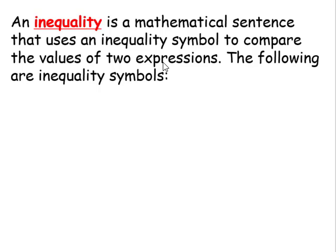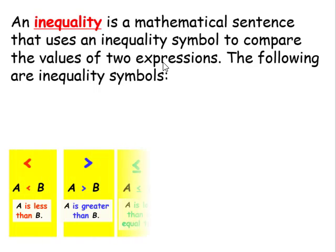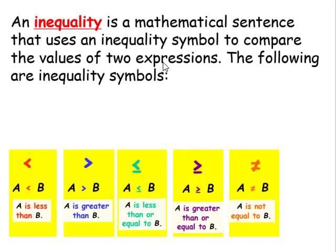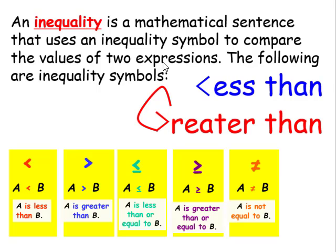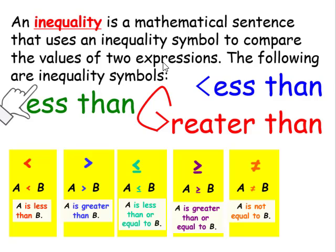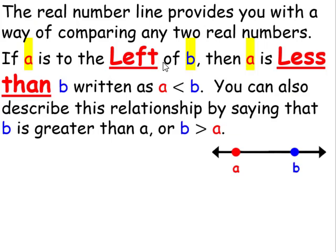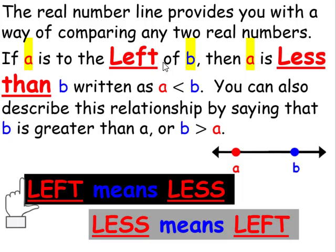An inequality is a mathematical sentence that uses an inequality symbol to compare the values of two expressions. If you ever get stuck remembering whether a symbol means greater than or less than, the less than symbol can have 'less than' written into it, and the greater than symbol can be formed similarly. Also, if you look at your left hand palm down, you can make an L for less than. The real number line provides a way of comparing any two real numbers. If A is to the left of B, then A is less than B. You can also describe this by saying B is greater than A. So left means less.